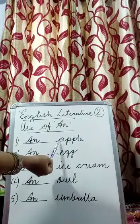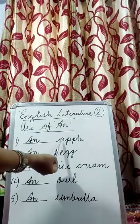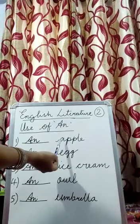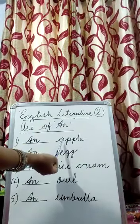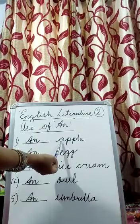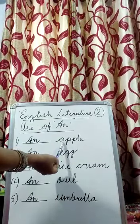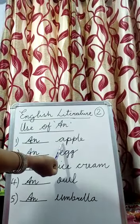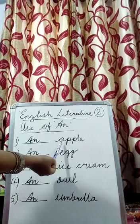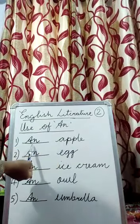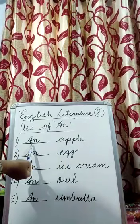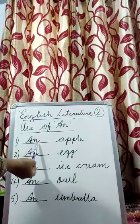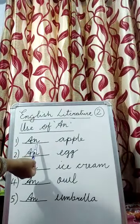Now, first one is APN. This word starts with letter A, and A is a vowel. So what you will do children here? You will write AN.